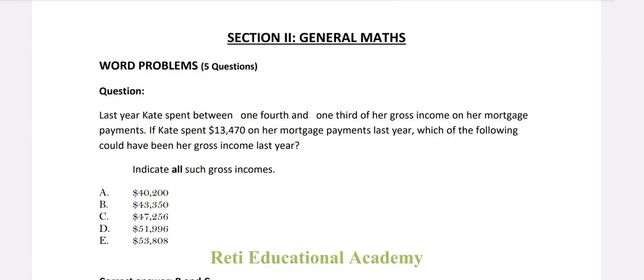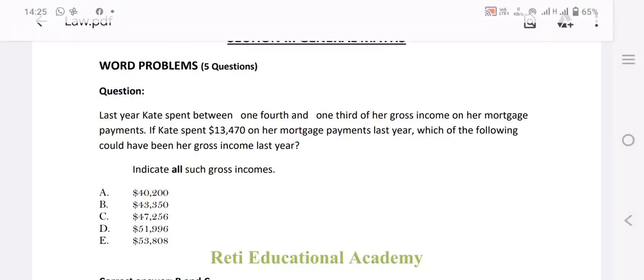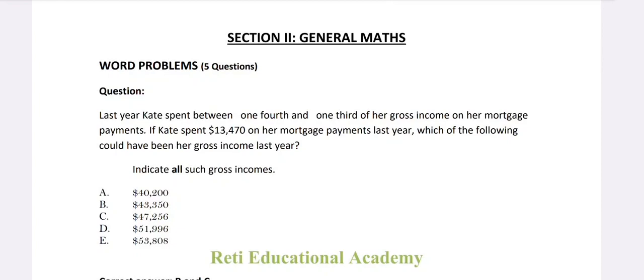Word problems — there will be five questions from word problems. Last year, Kate spent between one fourth and one third of her gross income on her mortgage payments. If Kate spent thirteen thousand four hundred seventy dollars on her mortgage payments last year, which of the following could have been her gross income last year? Indicate all such gross income.